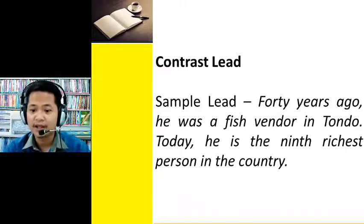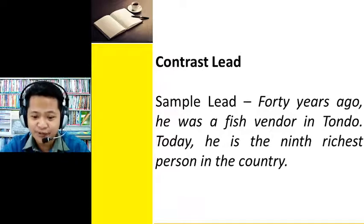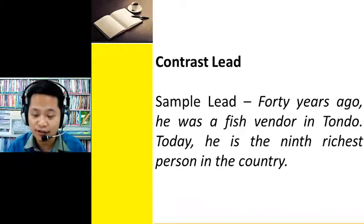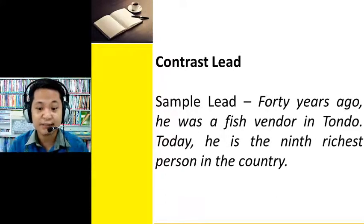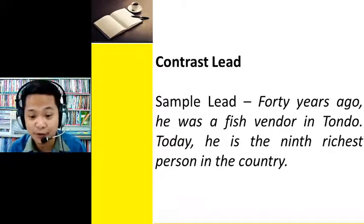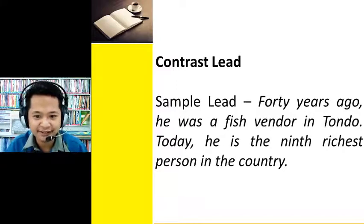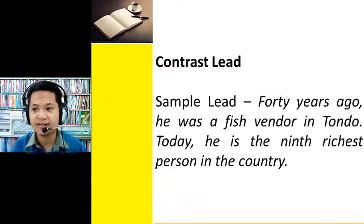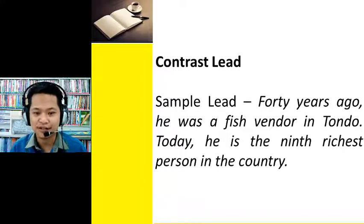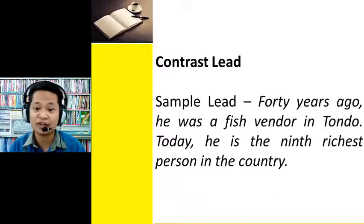There is also the contrast lead. For example: 'Forty years ago he was a fish vendor in Quiapo; today he is the ninth richest person in the country.' As you can see, there is a clear contrast. We use contrast leads for celebrities or people who started from a humble beginning and rose to great prominence — for instance, athletes who, through constant training and dedication, became superstars.